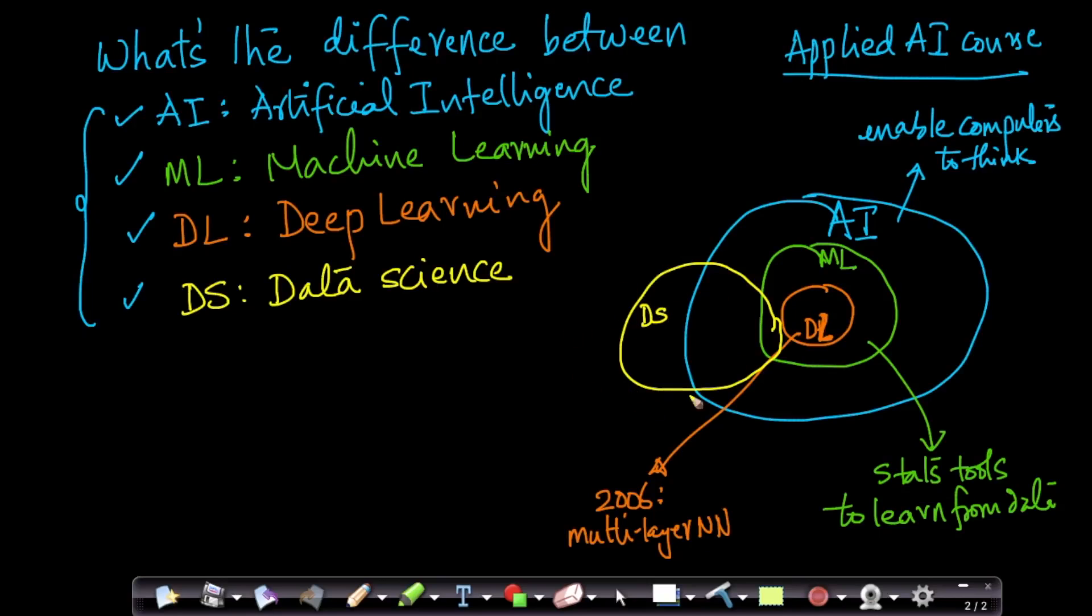But data science also has other areas. So in an actual, data science is all about understanding or making sense of data. So visualizing data is a very important aspect of data science.